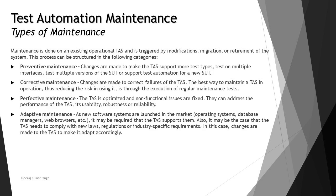There are four different types of maintenance in test automation. The first is preventive maintenance, which means changes are made to make the test support more test types, test on multiple interfaces, test multiple versions of the SUT, or support test automation for a new SUT. In preventive maintenance, we want to do general testing before it could fail in the real-time environment.